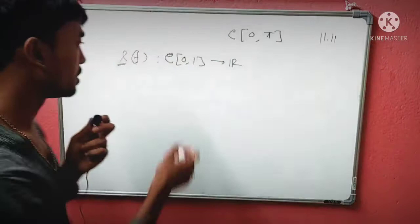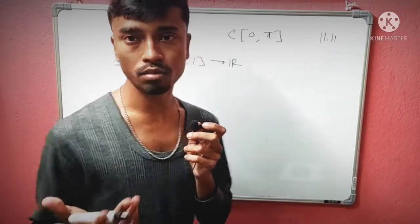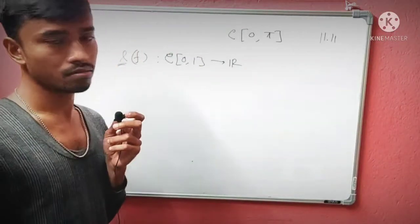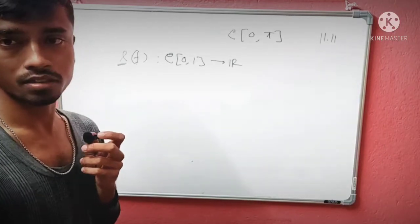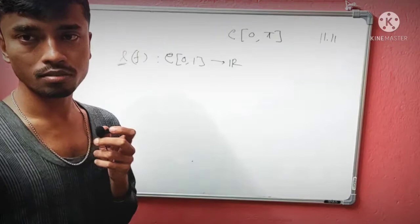A linear functional takes vectors and gives real numbers. You generally define it on normed linear spaces for good characteristics and beautiful properties.